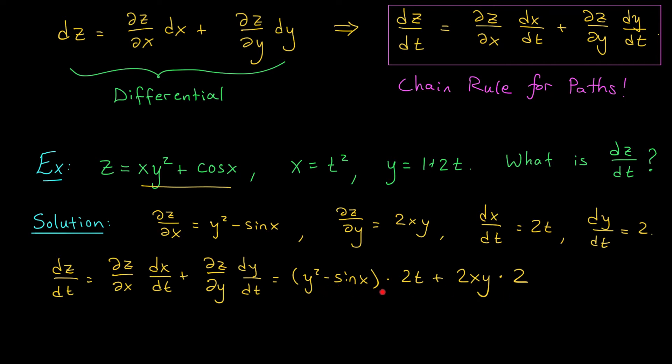we should replace the x's and y's in our final answer using these functions of t above. My derivative is therefore 1 plus 2t squared minus sine of t squared all times 2t plus 4 times t squared times 1 plus 2t. And there you have it folks, your first application of the chain rule for paths.